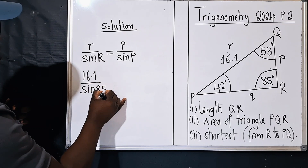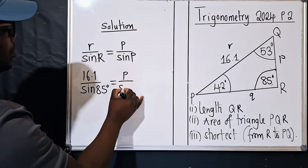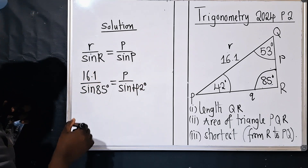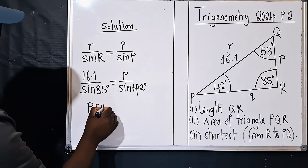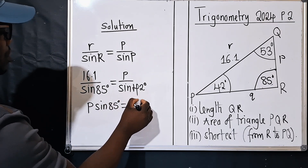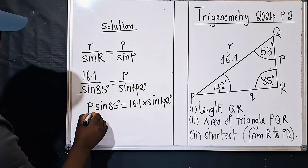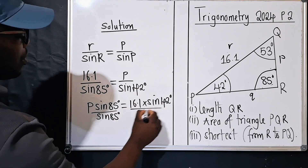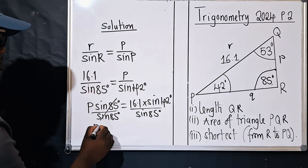Substituting values: r is 16.1 over sin R which is 85 degrees, and this equals p — what we are looking for — over sin P which is 42 degrees. We cross multiply, giving us: p times sin 85° equals 16.1 times sin 42°.